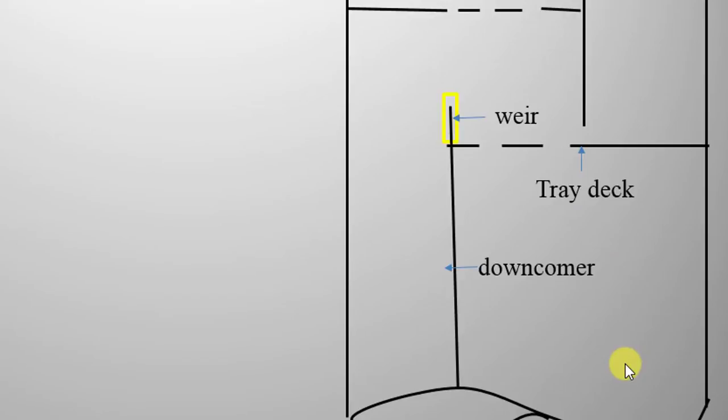Weir is used to maintain liquid level on tray so that vapor comes in contact with liquid, thus achieving vapor-liquid equilibrium.